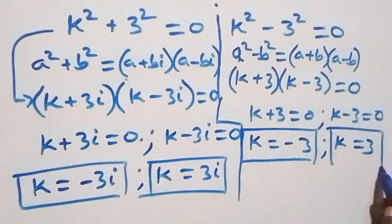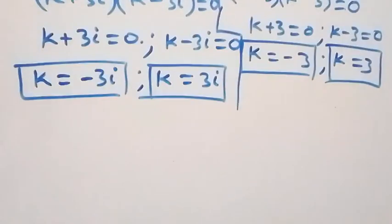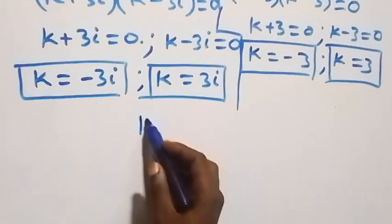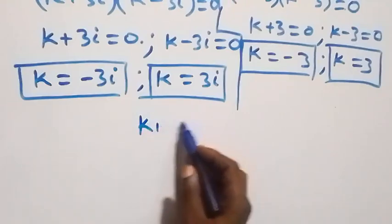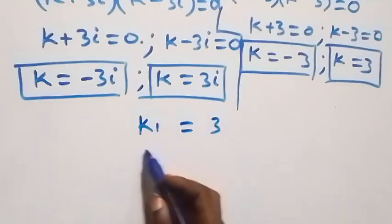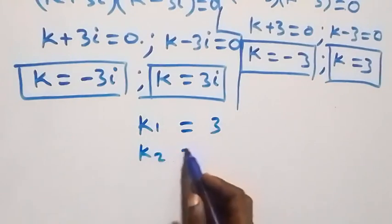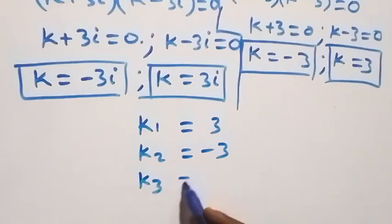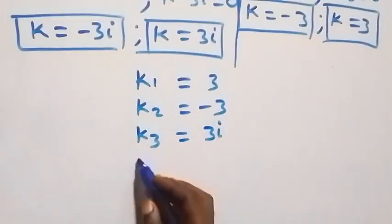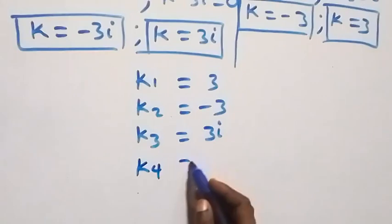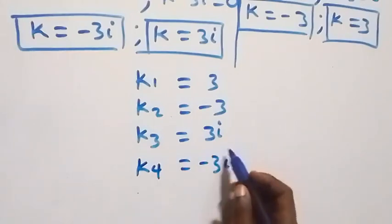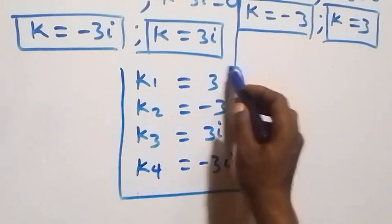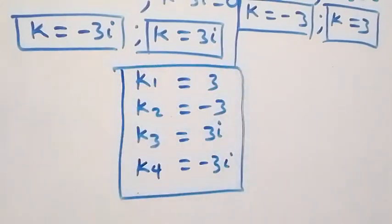Altogether we have four solutions, which we write as: k1 equals 3, k2 equals minus 3, k3 equals 3i, and k4 equals minus 3i. So we have four solutions — two real solutions and two complex solutions.